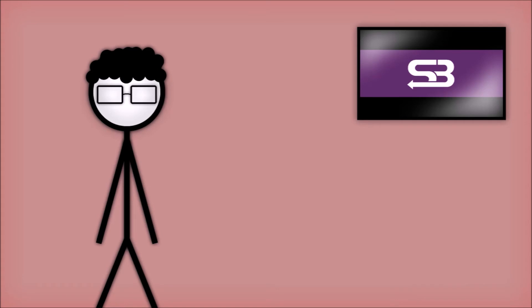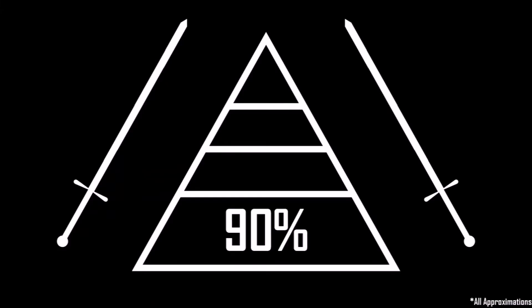The social system was quite rigid and mostly hereditary. About 90% of all people were peasants, with the remainder about 6% knights, 3% nobles, and only about 1% royals.